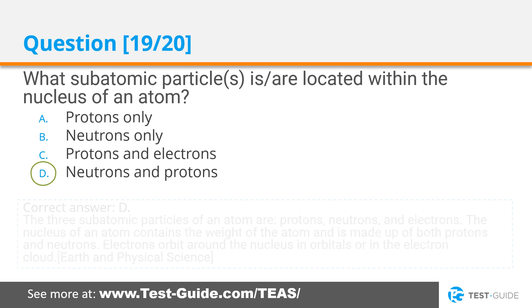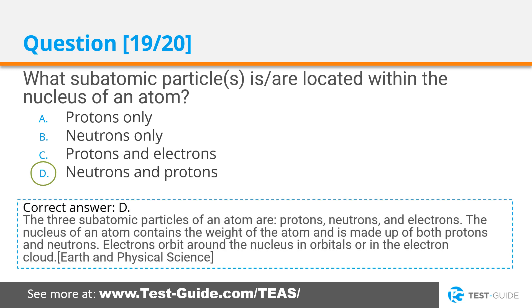Correct answer D. The three subatomic particles of an atom are protons, neutrons, and electrons. The nucleus of an atom contains the weight of the atom and is made up of both protons and neutrons. Electrons orbit around the nucleus in orbitals or in the electron cloud.